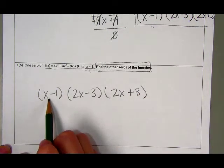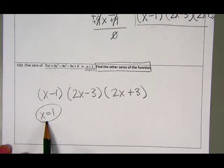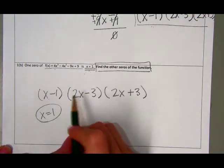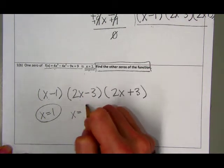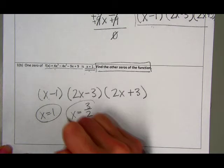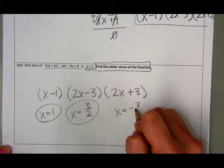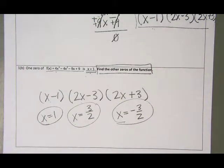If I set this guy equal to 0, I know x is going to be equal to 1. This matches the fact that x equals 1 was given in the original directions. If I set this guy equal to 0, I get x equals positive 3 halves. If I set this guy equal to 0, I get negative 3 halves. So those are my three zeros of this cubic function for the group warm-up.